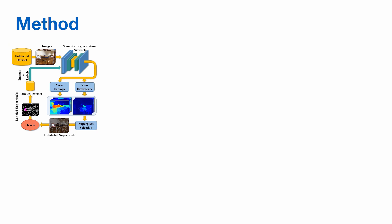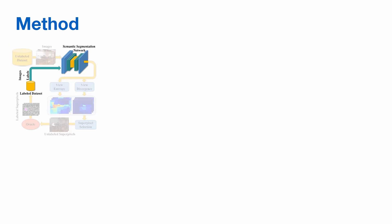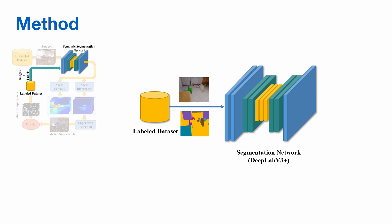Next, we explain the method in more detail. The network is trained to convergence with existing labeled data acquired in previous active selection iterations.